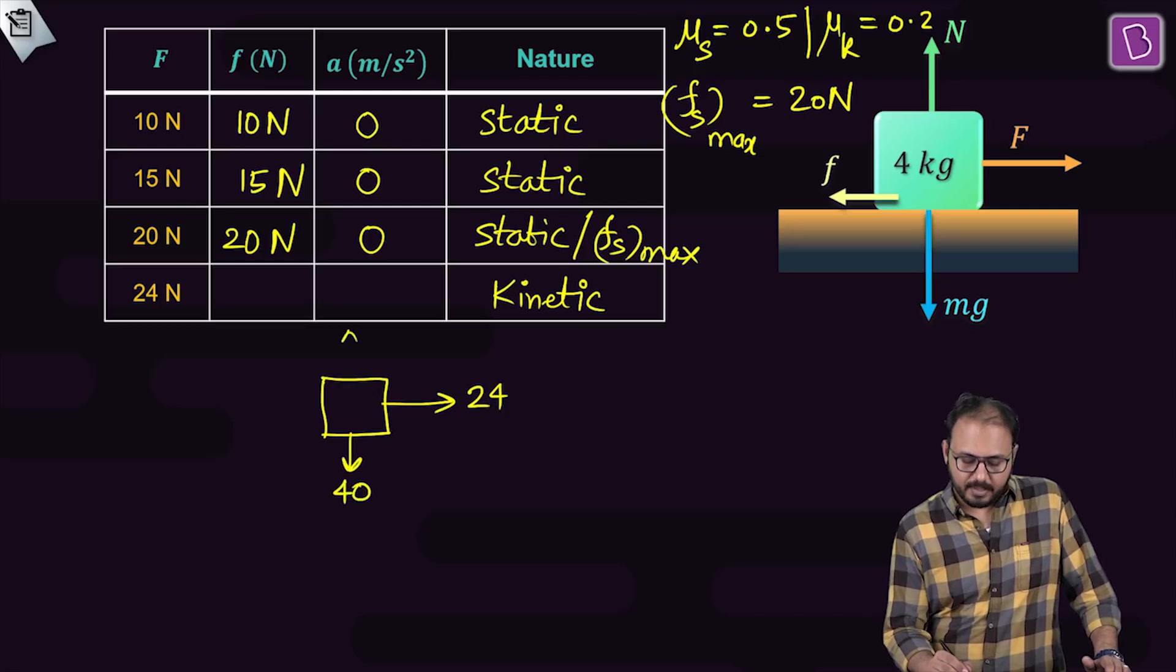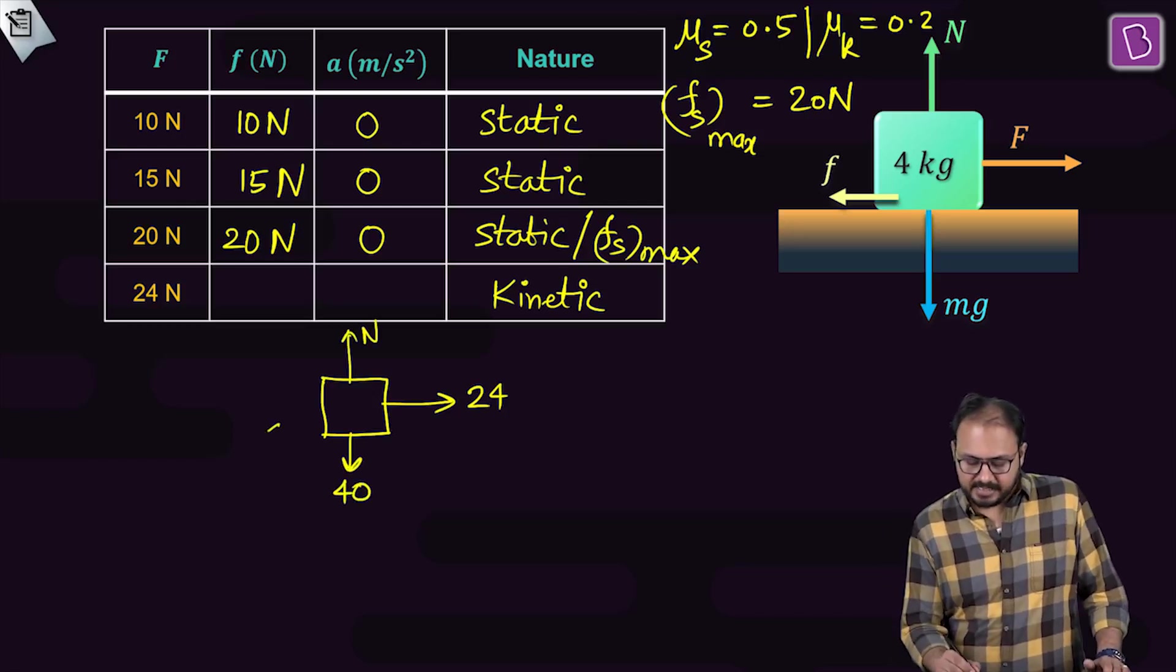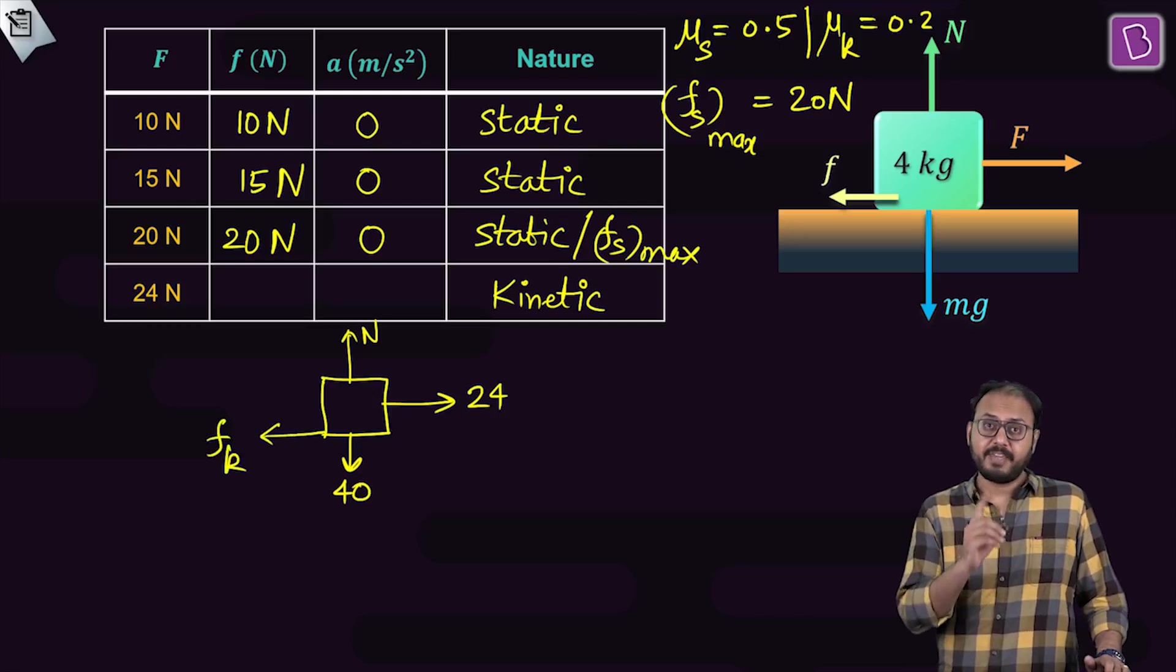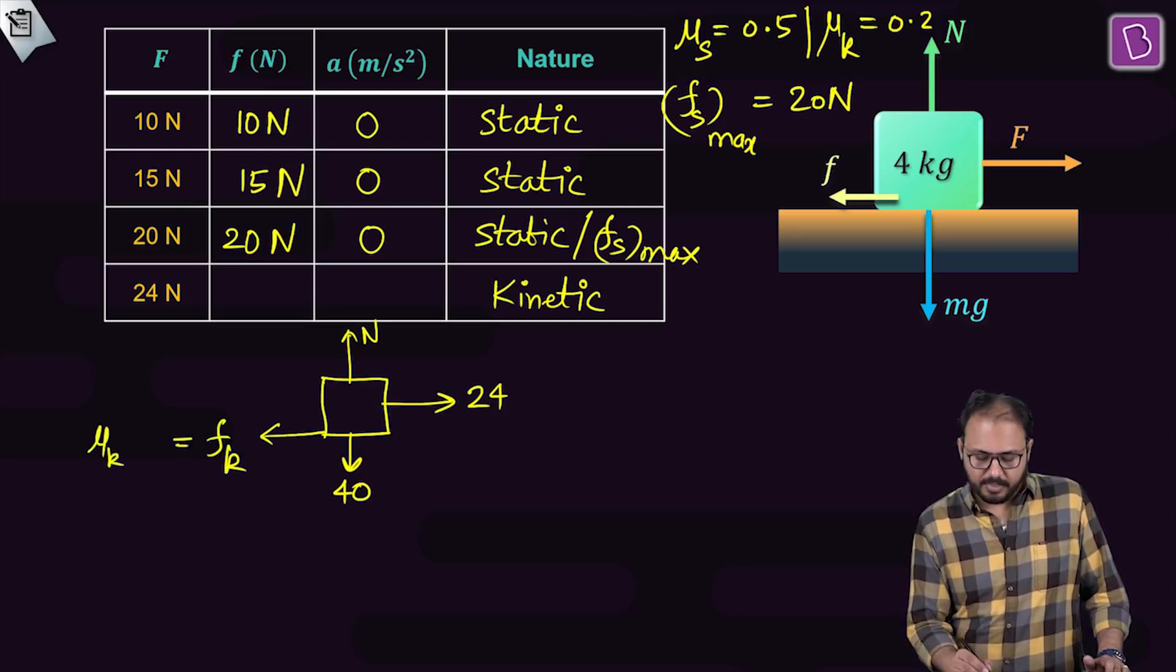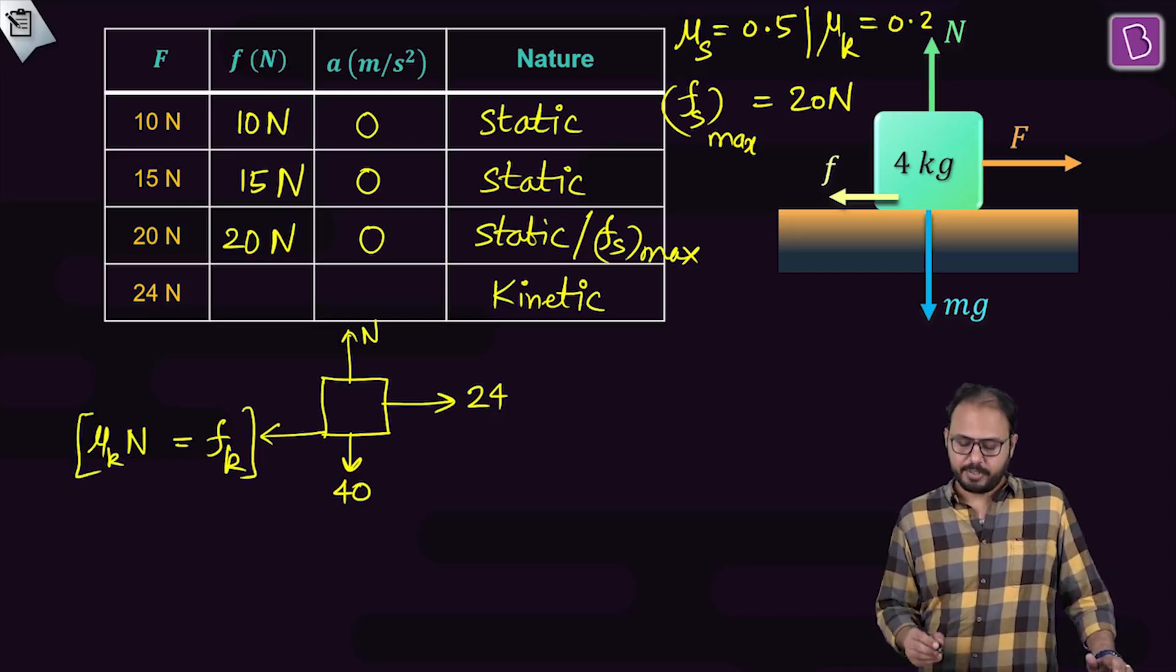And can I say that fk is acting behind. fk mind you. Can I say fk is also equal to μkN? Have you understood the diagram I have drawn here?